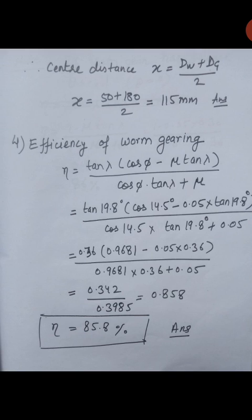Now we calculate efficiency of worm gearing using the equation: tan(λ)·(cos(φ) minus μ·tan(λ)) upon (cos(φ)·tan(λ) plus μ). Putting λ equal to 19.8 degrees, φ equal to 14.5 degrees, and μ equal to 0.05, after substituting these values we get efficiency equal to 85.8%.